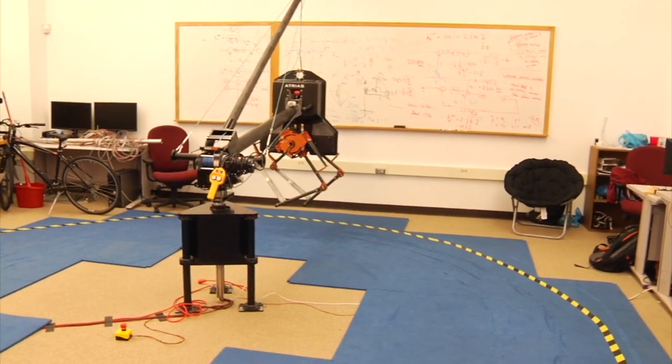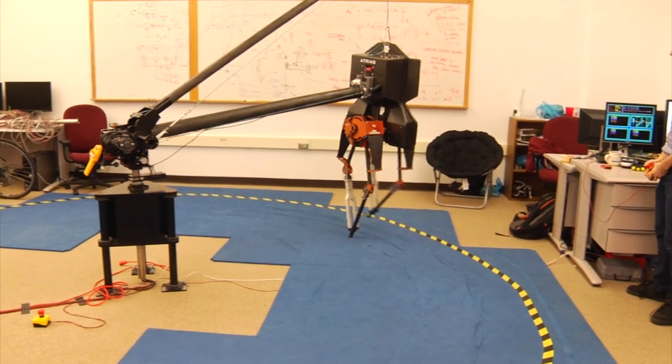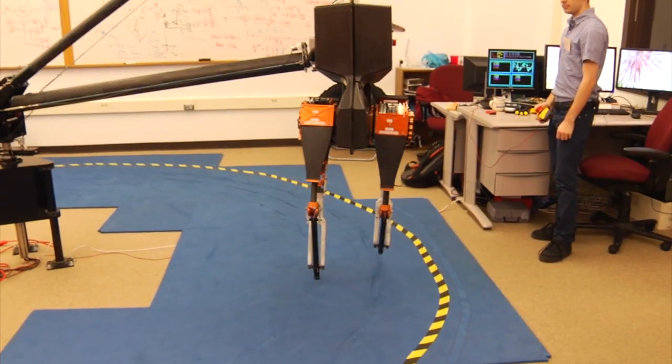The idea behind Atreus is that it's a very simple robot to model because it very closely resembles what we like to call a spring mass model, and it's an interesting way to represent walking and running in humans.